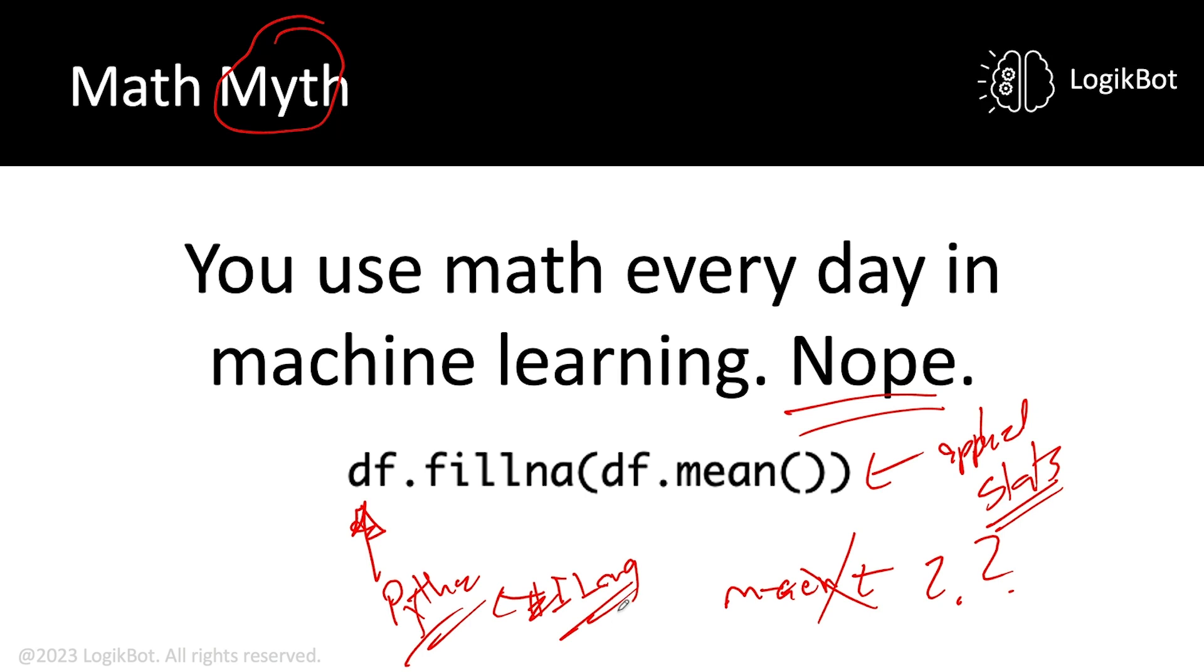So what do we have? This is Python, DF, data frame, we're defining a data frame. And we're using pandas to do this. Fill NA, this is the applied statistics part. What is NA? NA means not a number, and that is Python. That means there's a hole that needs to be filled in this feature. DF dot mean. We want the mean of that column. So this is what I mean by applied stats.